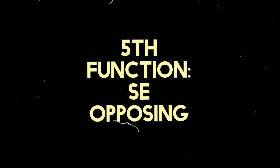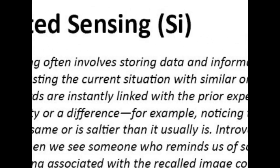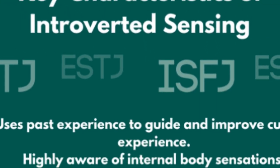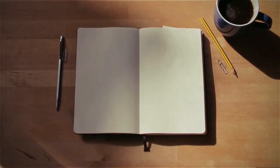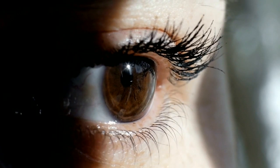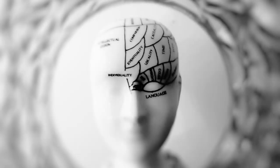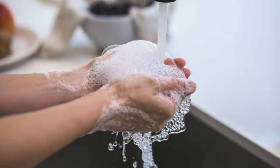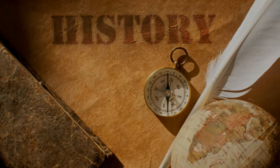For ISFJ, introverted sensing is the dominant perspective. As an introvert, it is the strongest, most developed function they use. As such, ISFJs put a lot of emphasis on doing things by the book, paying attention to details, memorizing and recalling information, using common sense, and attending to practical matters. Stability and security is of great concern to ISFJs, and extroverted sensing can sometimes appear like a threat and interference to their self-interests.